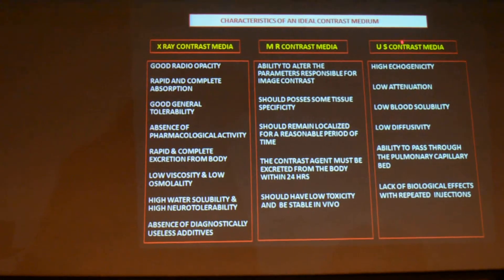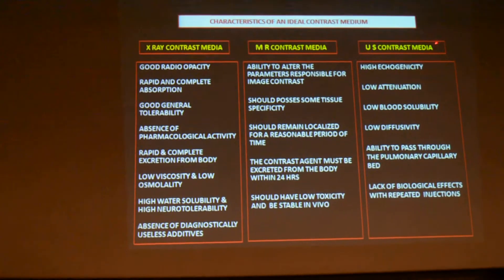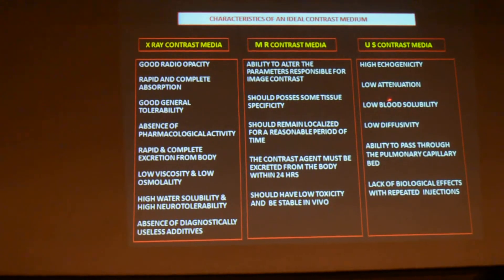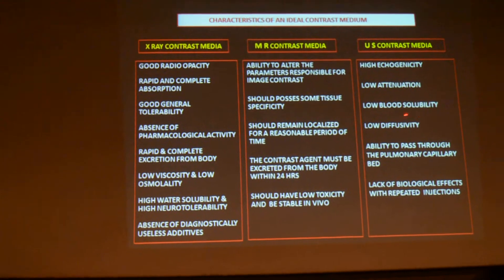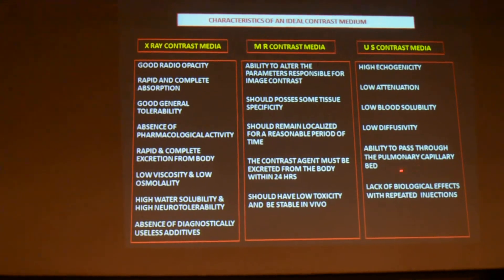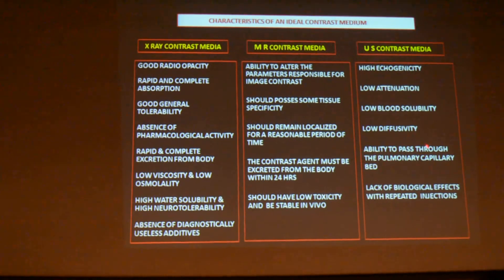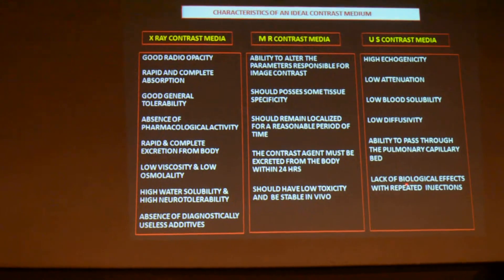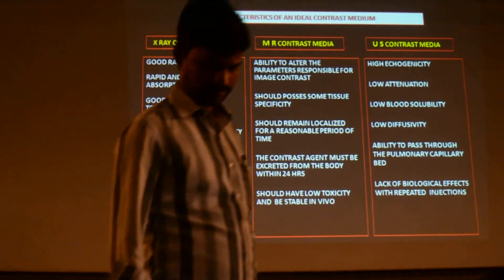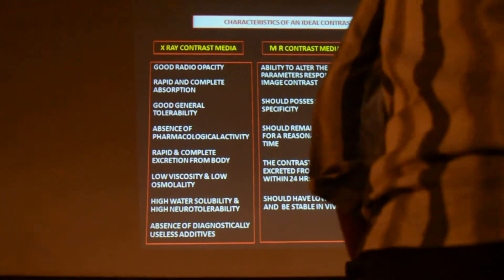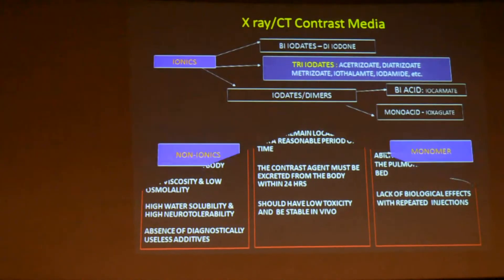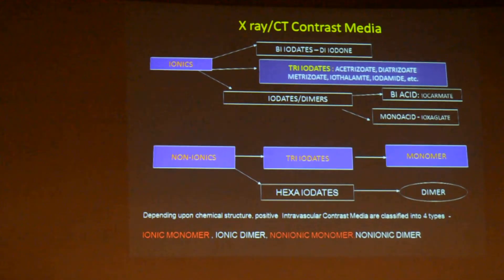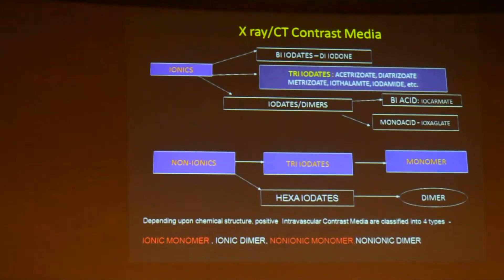For the ideal ultrasound contrast media, it should have high echogenicity, low attenuation, low blood solubility and low diffusivity, and it should be able to pass through the pulmonary capillary bed. It should not have any biological effects on the body, because we can use it repeatedly. Those are the basic ideal contrast media characteristics which they should all possess.